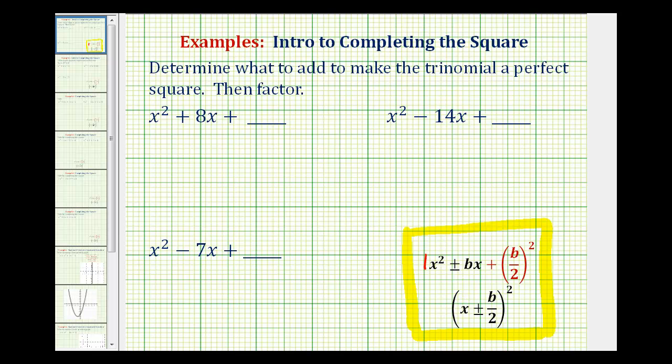So looking at our first example, we need to recognize that b is equal to positive eight. So b divided by two squared would just be eight divided by two, which is four squared, which is equal to 16. So if the constant term here is positive 16, this will be a perfect square trinomial.